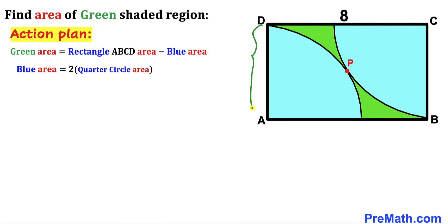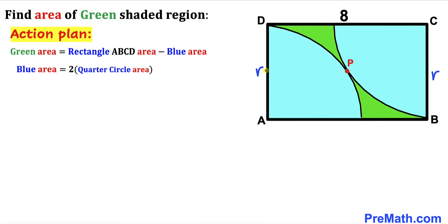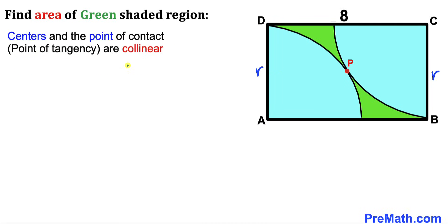We know that AD is the radius of one quarter circle and BC is the radius of the other quarter circle. Let's label this radius as lowercase r — so both AD and BC equal r. Furthermore, side length AD is also the width of rectangle ABCD. So our task is now to calculate this radius r.